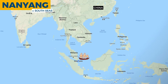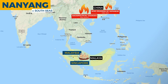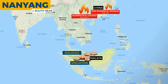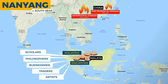Since the 19th century, Chinese immigrants have always been present in Malaya, which includes Singapore and Malaysia. But sociopolitical changes in China in the 20th century and World War II led to a greater number of Chinese migrants traveling to the South Seas. These include scholars, philosophers, businessmen, traders, and artists.